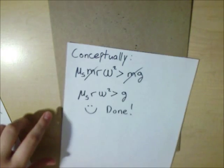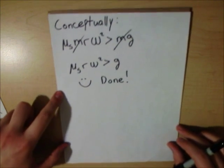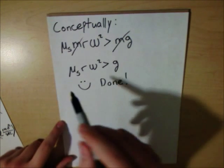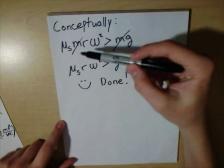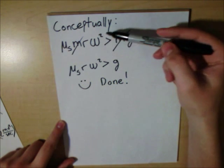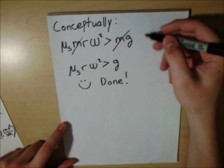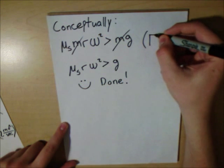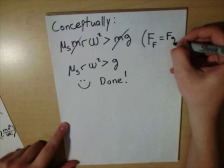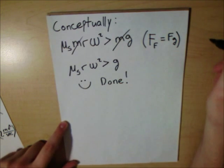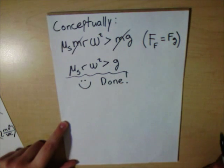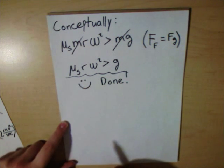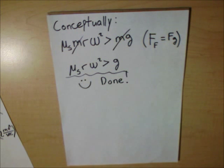But also conceptually, you can think of it this way, where you have the coefficient of static friction times the mass times the radius times omega squared will always be greater than the mass times gravity. And this we got from force of friction equals force of gravity. We have this coefficient of static friction times radius times omega squared will always be greater than gravity.